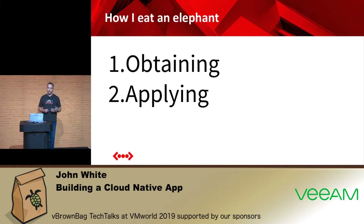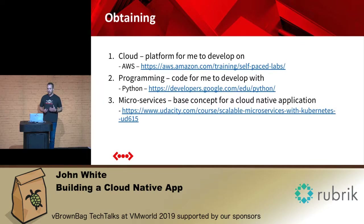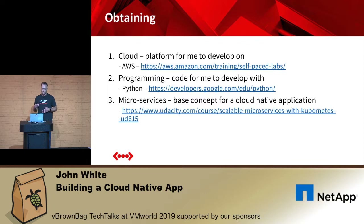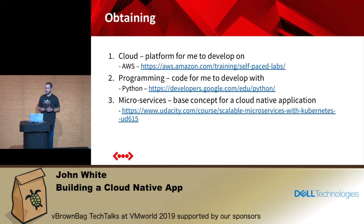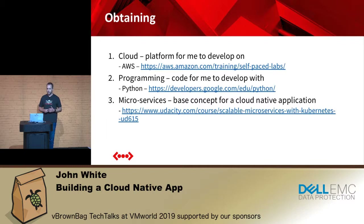The way I eat an elephant when I learn is I obtain and I apply. When I was obtaining this time I broke it down into three phases. First, I needed a platform to develop on. I used AWS for this cloud-native application I was building, and if you don't know, there are awesome free self-paced labs on the AWS site. I spent a lot of time building things through those modules and using their startup modules to get going.